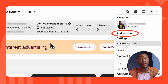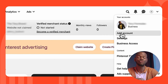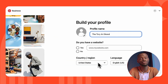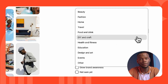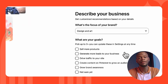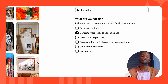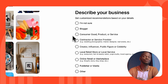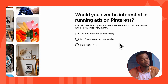Log in and click the down icon at the top right of the screen, then select Add Account. Choose Create a Free Business Account, then Create a Linked Account. Fill out the fields to build your profile, then click Next. Now fill out the fields to describe your business — for example, if you're a professional illustrator preparing to launch a digital drawing course and want to generate more leads.